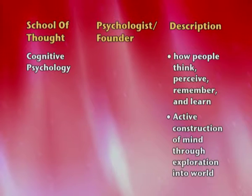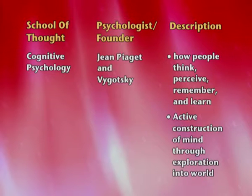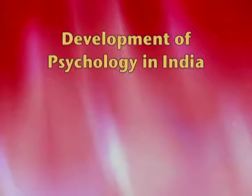The last school of thought is cognitive psychology. Cognition refers to mental processes such as thinking, decision-making, and memory. This school was given by Jean Piaget and Vygotsky, a Russian psychologist. Cognitive psychology studies how people think, remember, and use mental processes, and how a human being actively constructs the data around them.